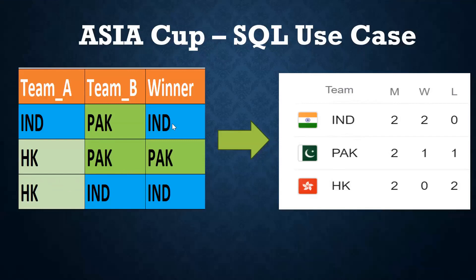Looking at wins: India won two matches, Pakistan won one, and Hong Kong won zero. This is the requirement — from my table I want to display team names, total matches, number of wins, and number of losses. This is a very important interview question.